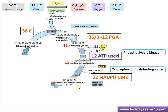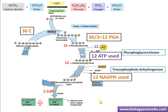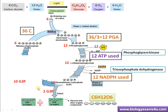Now we have 12 glyceraldehyde-3-phosphate molecules. Out of these, two molecules of G3P are required for the synthesis of one molecule of glucose, since glucose is a C6 compound. Two molecules of the three-carbon G3P are joined to form the six-carbon compound glucose (C₆H₁₂O₆). So out of 12 G3P molecules, two are utilized for the synthesis of glucose.